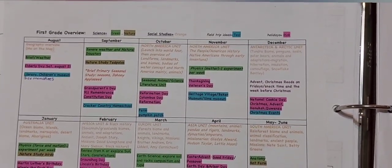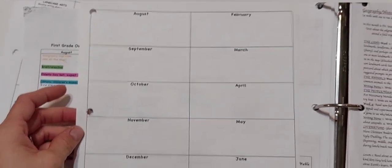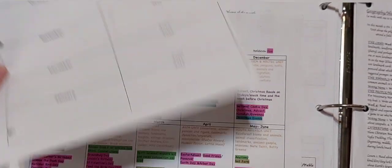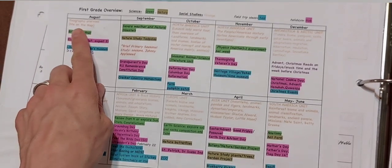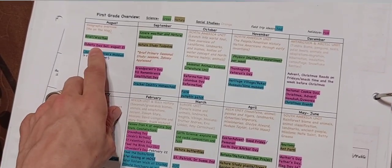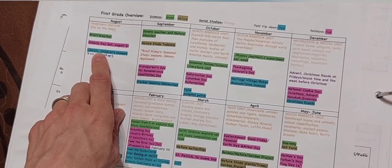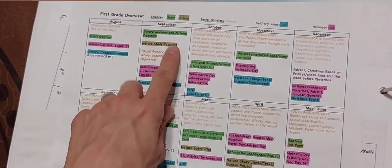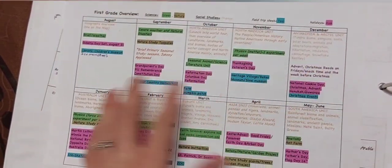This is how I plan for the year at a glance. And this is what the blank template looks like now. The orientation's a little bit different. So I like to know my themes for history, geography, science, what holidays will be each month, and what field trips I might go on, and what nature study topics we might focus on at a glance.